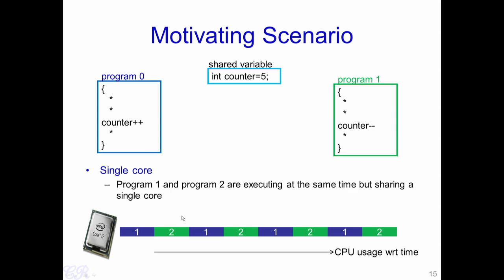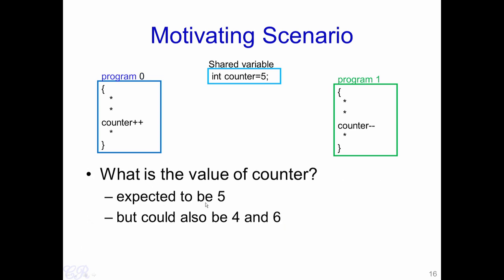The question is: what would be the value of counter? One would expect the counter value is 5, because if program 0 executes first, it increments counter from 5 to 6, then program 1 executes and decrements the shared counter from 6 back to 5. On the other hand, if program 1 executes first, counter decreases from 5 to 4, then program 0 increments it from 4 back to 5. So one would expect the result to always be 5. However, we will show that we can also obtain values of 4 and 6 for counter.